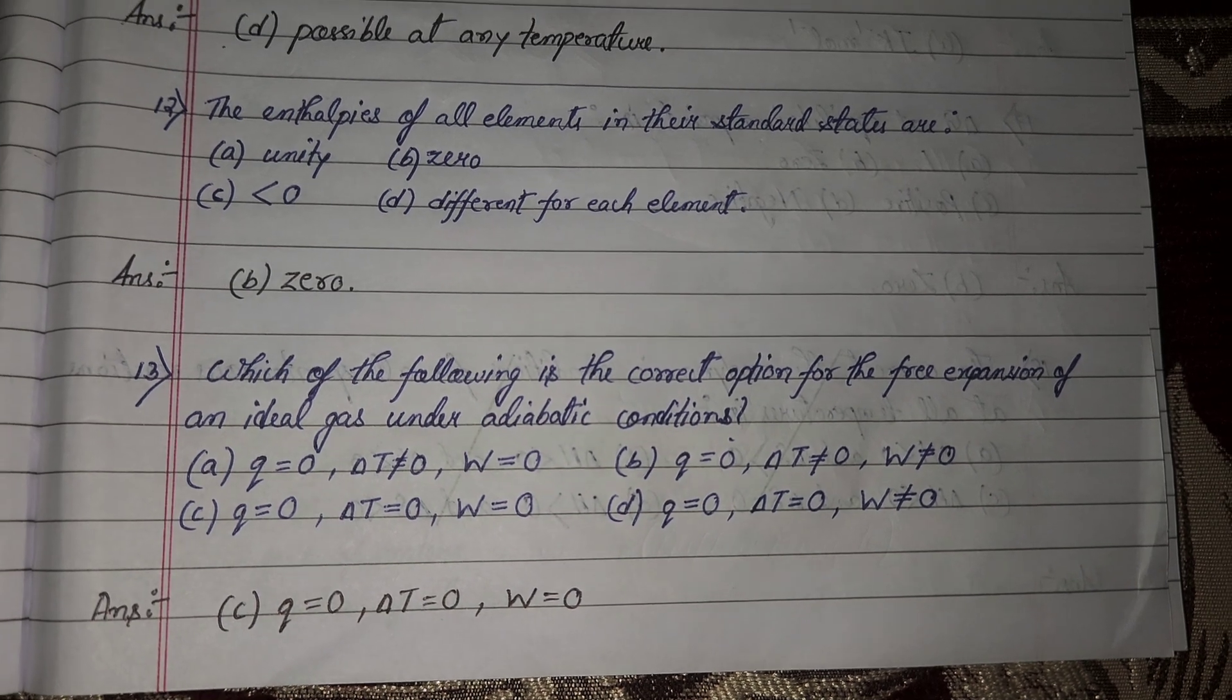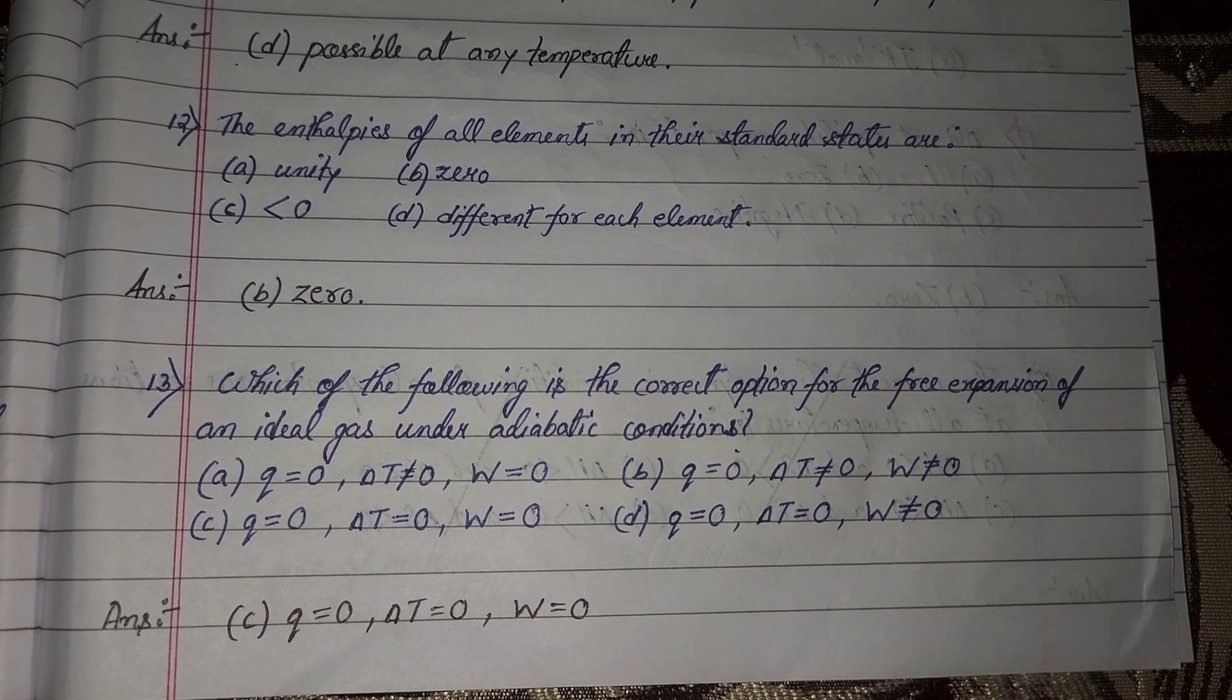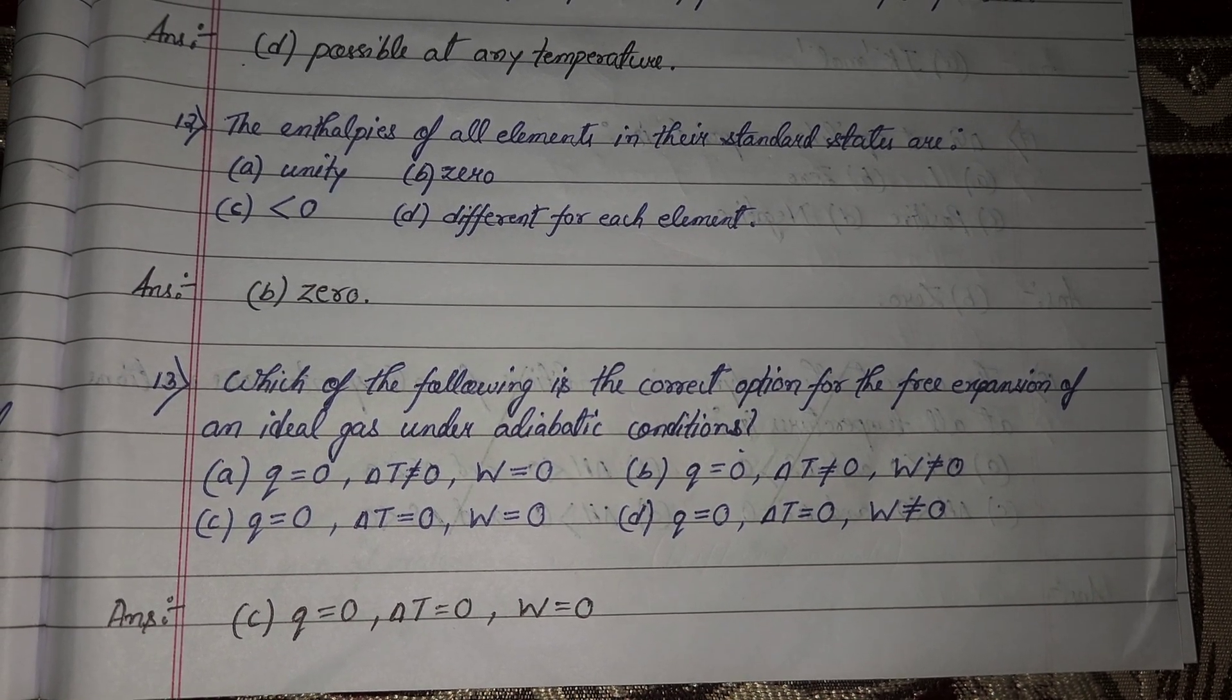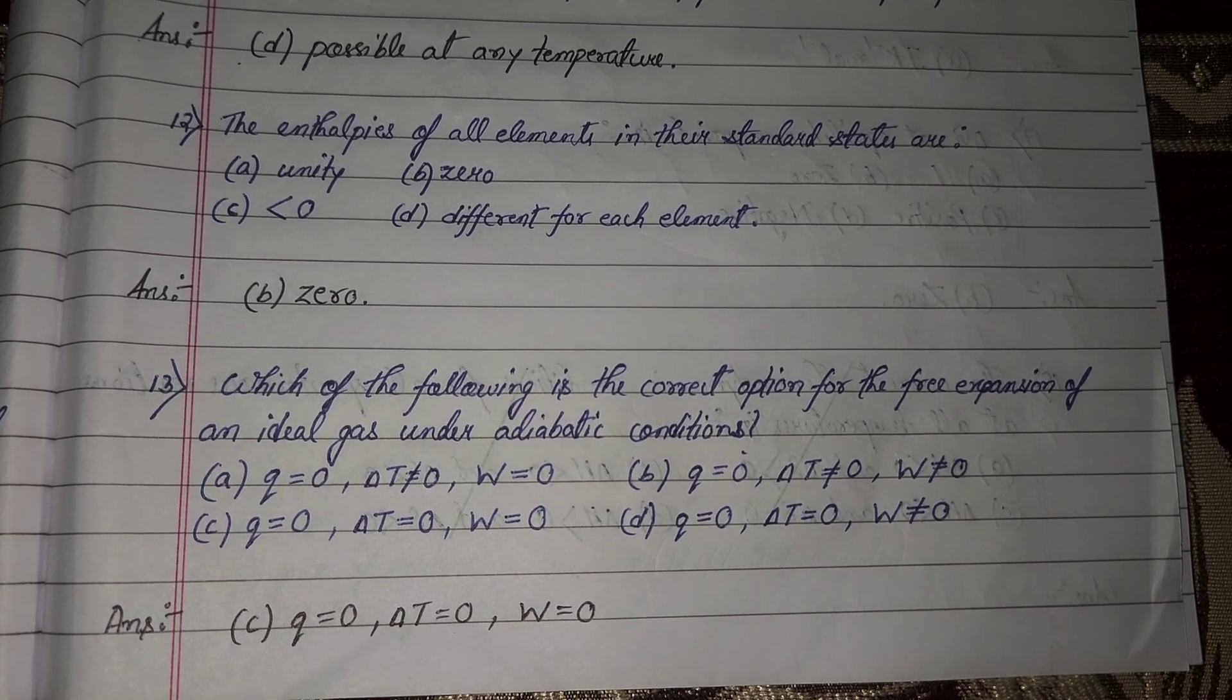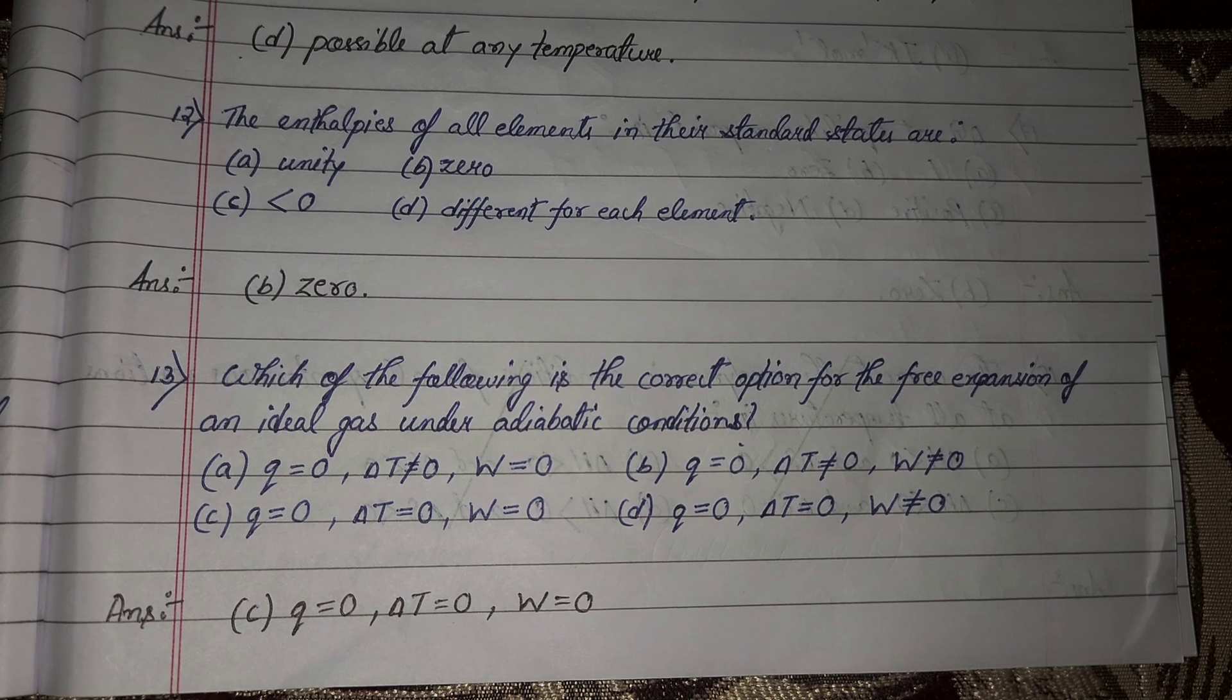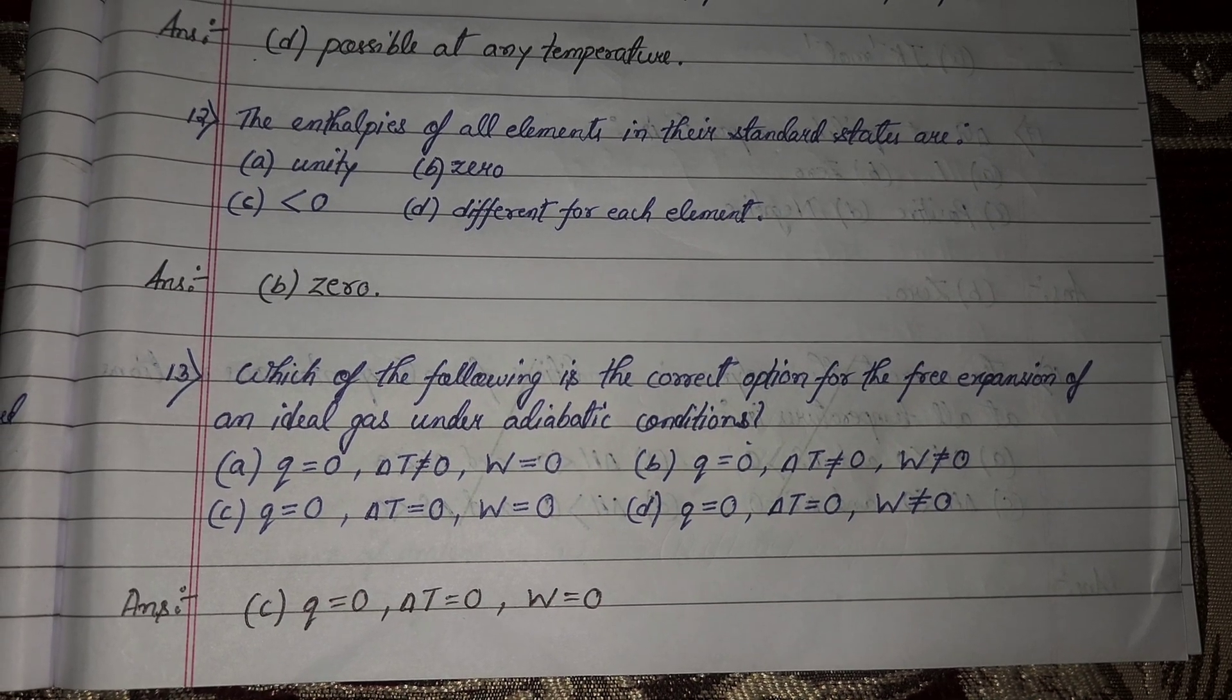Next question 13, which of the following is the correct option for the free expansion of an ideal gas under adiabatic condition? Option number C, Q equal to 0, delta T equal to 0 and W equal to 0 will be your correct answer.